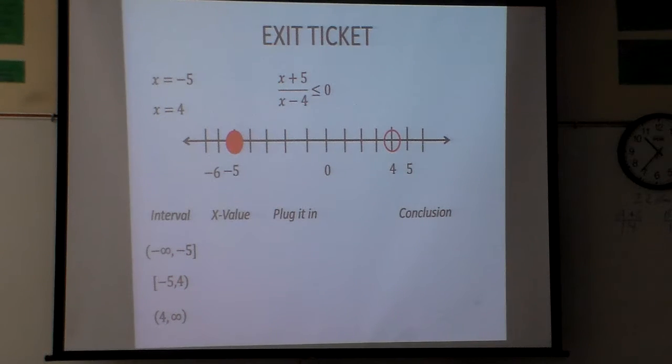Here are my three choices I got to test. I pick the value negative 6 and plug it in. If I plug negative 6 in, that's going to be negative 1 over negative 10. And a negative over a negative makes a positive.